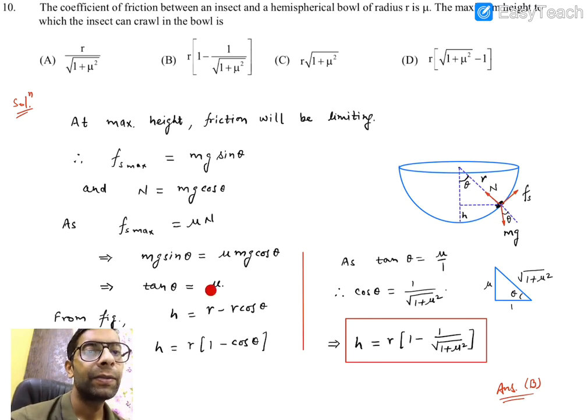Since tan theta equals mu, we need to convert this. Mu is perpendicular divided by base, and the hypotenuse is square root of 1 plus mu square. So cos theta equals 1 divided by square root of 1 plus mu square. Therefore, h equals r times (1 minus 1 over square root of 1 plus mu square).